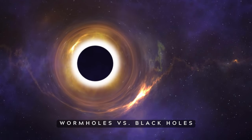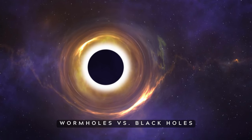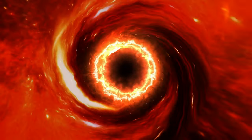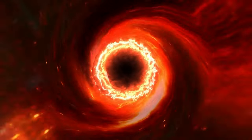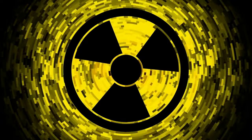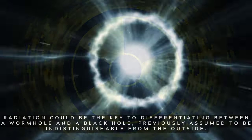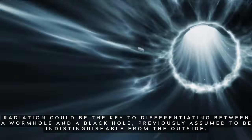Six: Wormholes vs. black holes. Certain solutions of general relativity allow for the existence of wormholes, where the mouth of each is a black hole. However, a naturally occurring black hole formed by the collapse of a dying star does not by itself create a wormhole. This radiation could be the key to differentiating between a wormhole and a black hole, previously assumed to be indistinguishable from the outside.